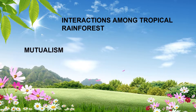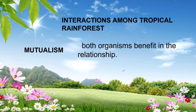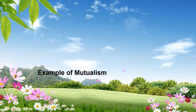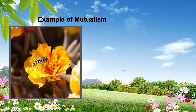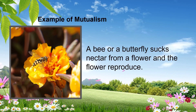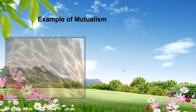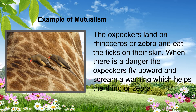The second interaction is called mutualism. Mutualism is when both organisms benefit in the relationship. For example, a bee or a butterfly sucks nectar from a flower, and the flower reproduces. Another example: oxpeckers land on a rhinoceros or zebra and eat the ticks on their skin. When there is danger, the oxpeckers fly upward and scream a warning, which helps the rhino or the zebra.